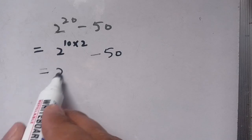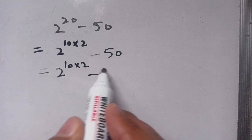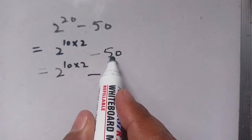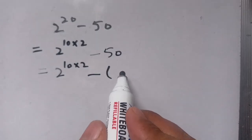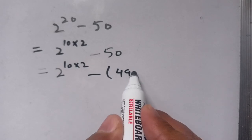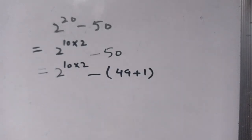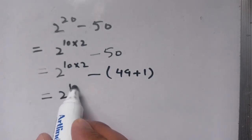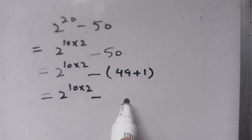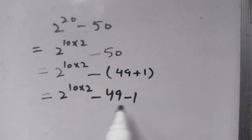In the next step, 50 can be broken down in terms of 49. We can write it as 49 plus 1. So in the next step we write it as 2 power 10 times 2 minus 49 minus 1.